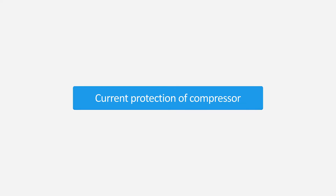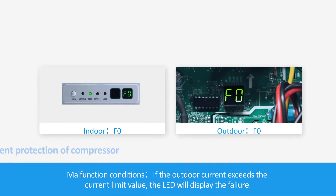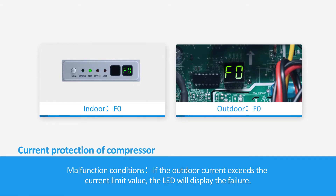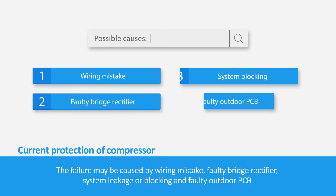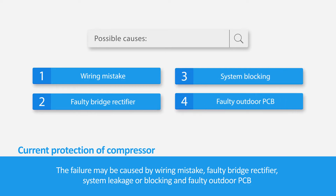Current protection of compressor. If the outdoor current exceeds the current limit value, the LED will display the failure. The failure may be caused by wiring mistake, faulty bridge rectifier, system leakage, or blocking and faulty outdoor PCB.